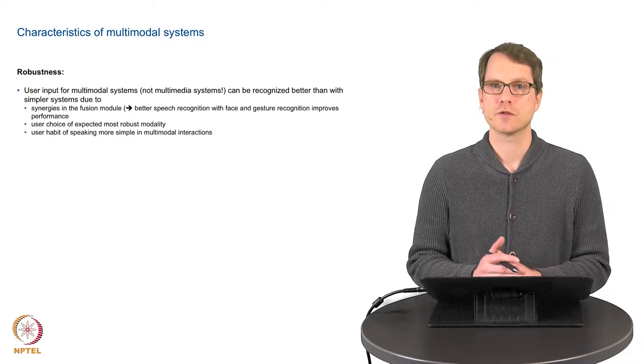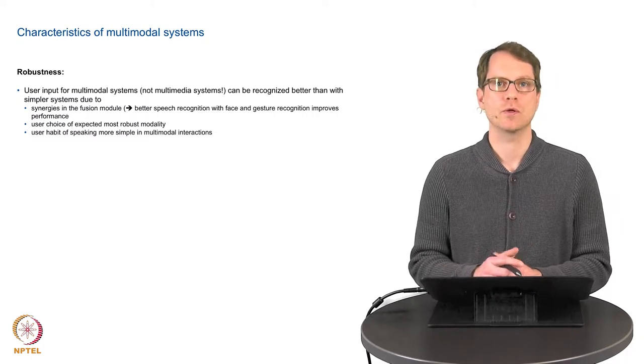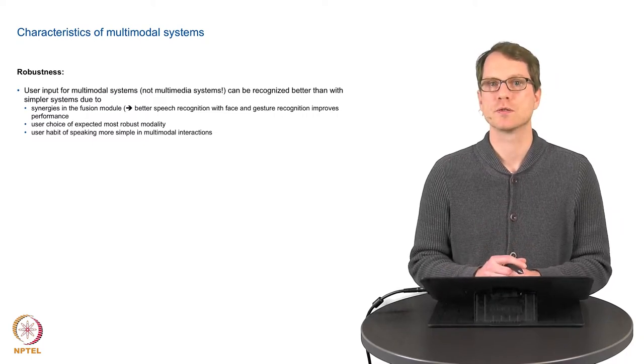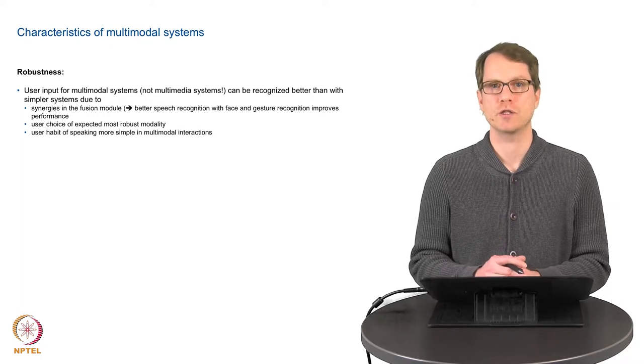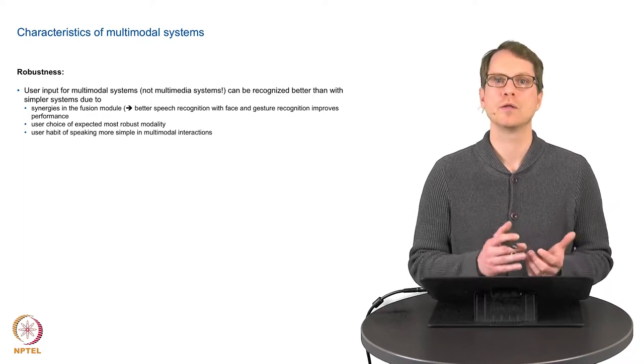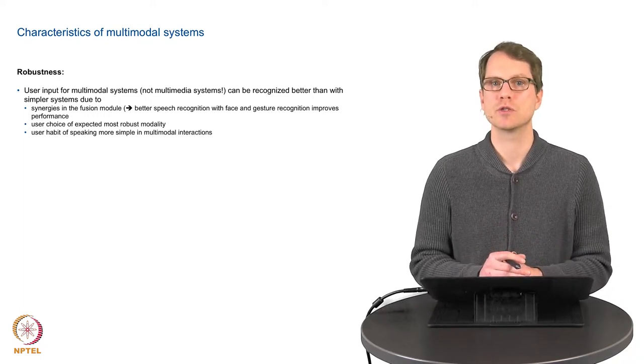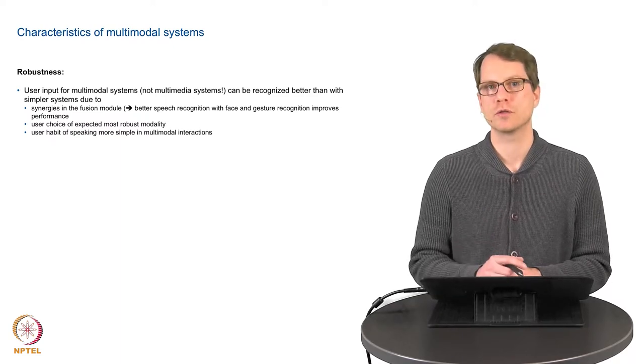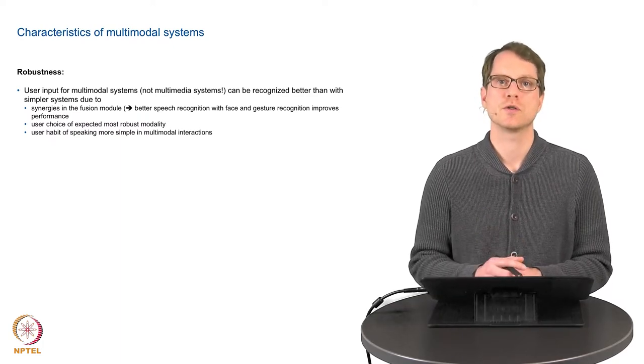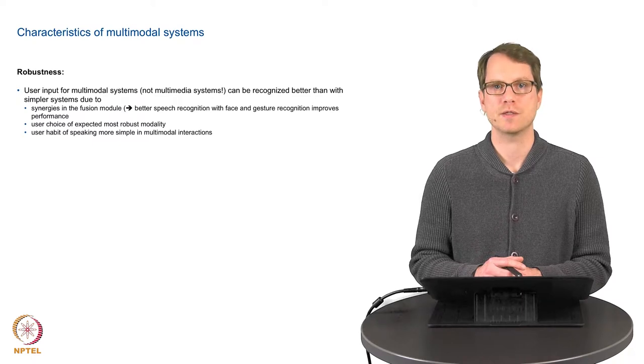Having different sources of information means that our classifiers can be more robust because we have more information available. If on one modality the system is unsure and we have redundant information, then additional sources can improve the classifying success.